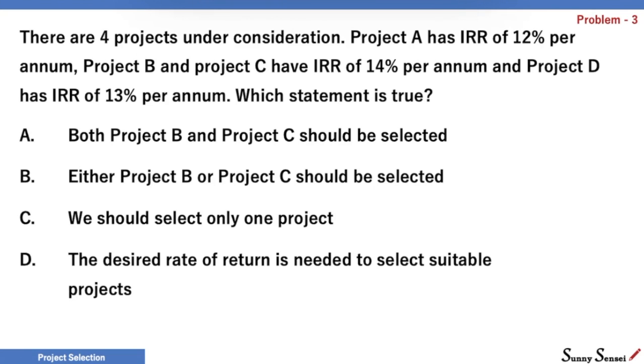This is an interesting problem. Please pause the video and try to figure out the correct choice. Let's have another look at the choices. Choice A is Project B and Project C. These 2 projects have the highest IRR at 14%. But can we pick both of them? Is the IRR high enough? We don't know.